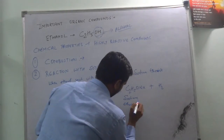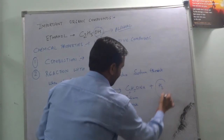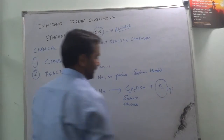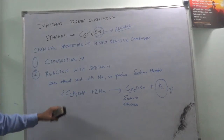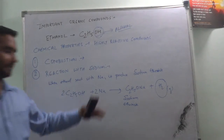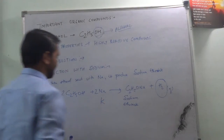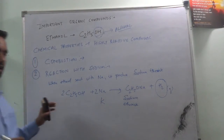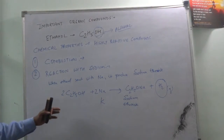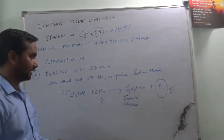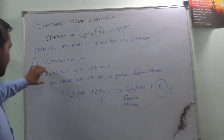This hydrogen gas is produced whenever sodium or potassium is reacted with alcohol — it always produces hydrogen gas.